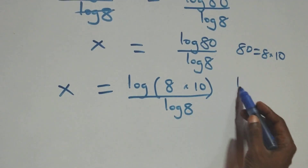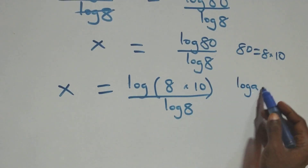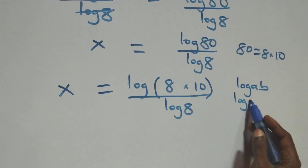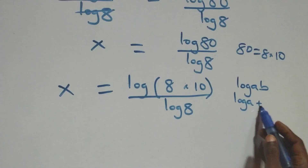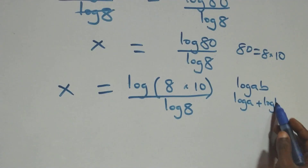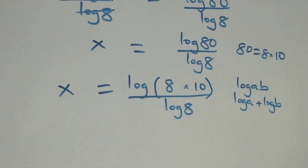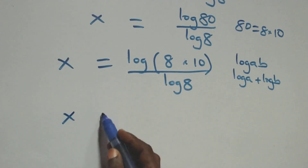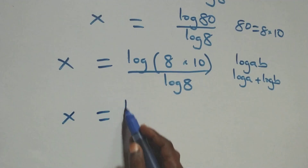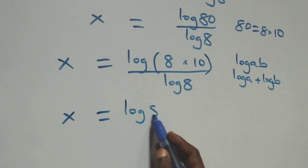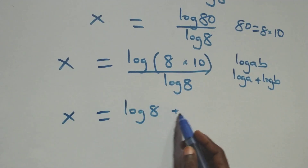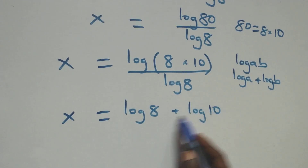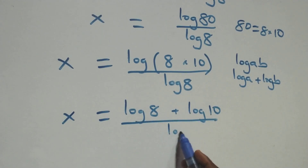This follows the log product rule. When we have log(a times b), this is the same thing as log a plus log b. So we have x equals to log 8 plus log 10, all over log 8.